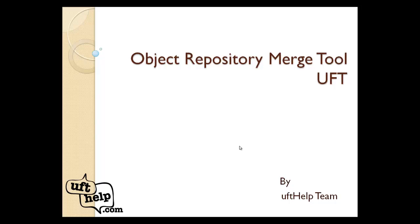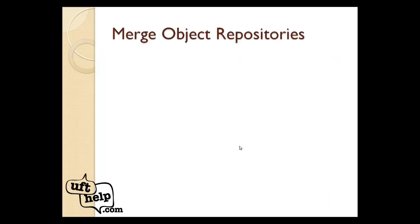To achieve this, we need to have objects from both object repositories into one object repository, so we will use the merge tool. The merge tool also helps in merging and resolving conflicts in case we have different objects that have the same name and we need to merge those — it will show us the conflict and we can resolve it.